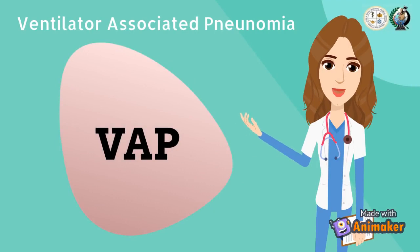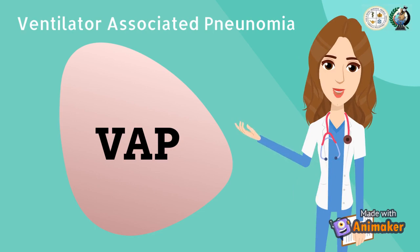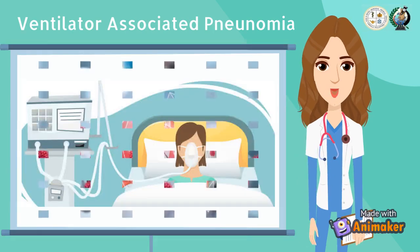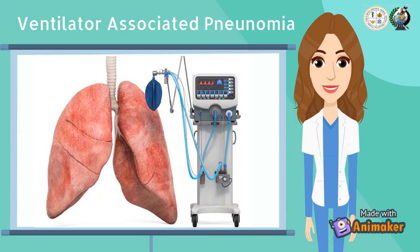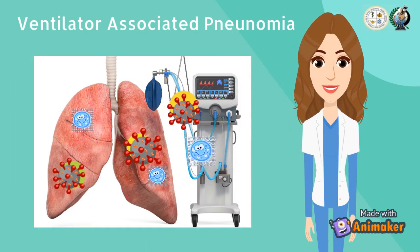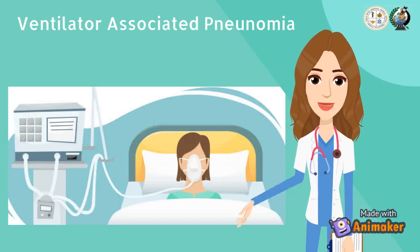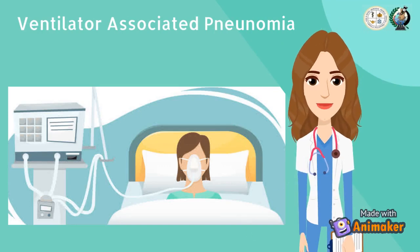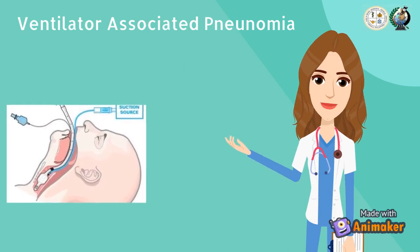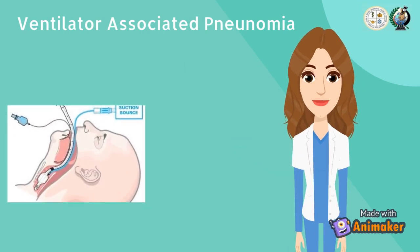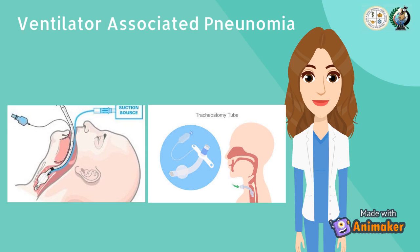And finally, for the last healthcare-associated infection, we have ventilator-associated pneumonia or simply VAP. The CDC defines VAP as a lung infection that develops in a person who is on a ventilator. This infection may occur if germs enter through the tube and get into the patient's lungs. Ventilator-associated pneumonia or VAP is pneumonia that develops 48 hours or longer after mechanical ventilation by means of endotracheal tube or tracheostomy tube. Easy, right?